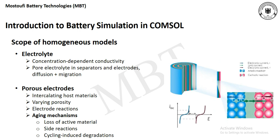The second component is the porous electrodes, which can be analyzed in different ways, like intercalating host materials, porosity variation, and electrode reactions. One of the most interesting topics is aging mechanisms — for example, you could study the loss of active material, side reactions like CO2 formation on the anode, or cycling-induced degradations.